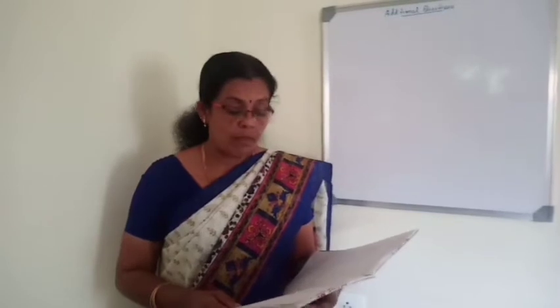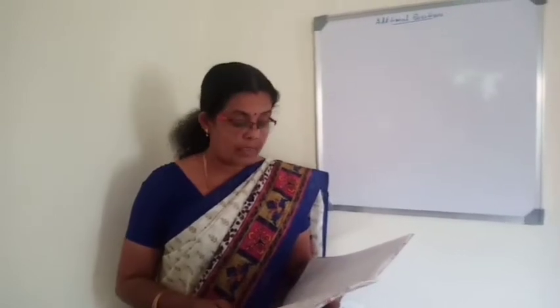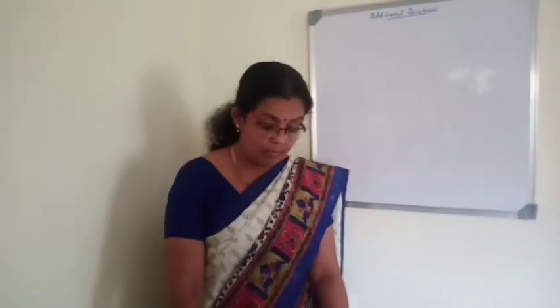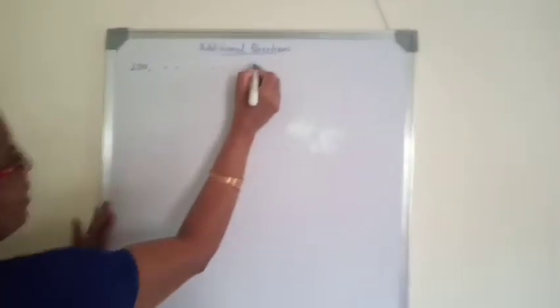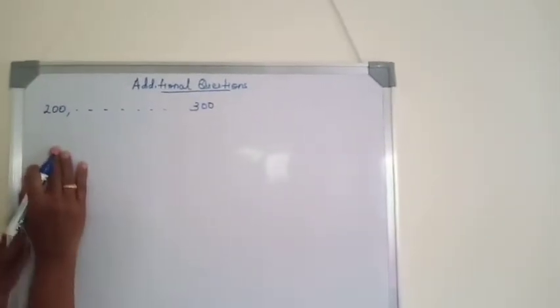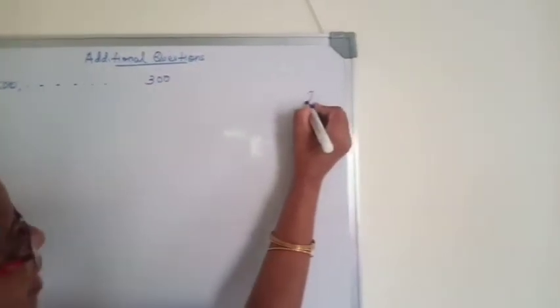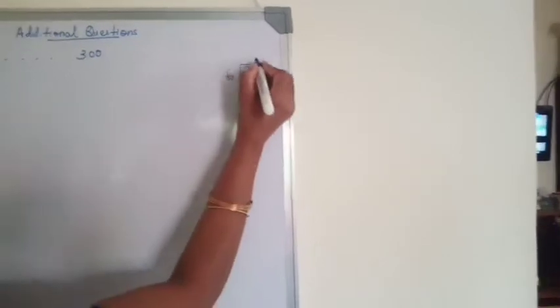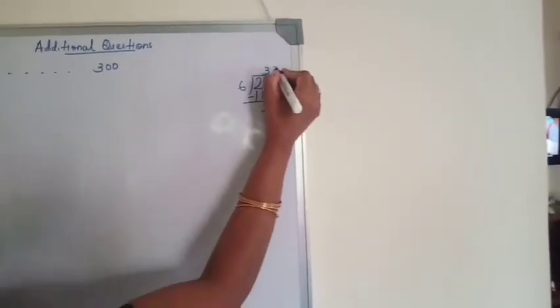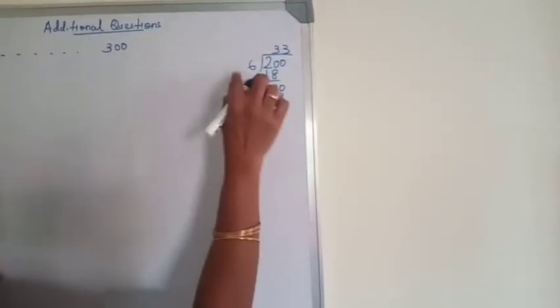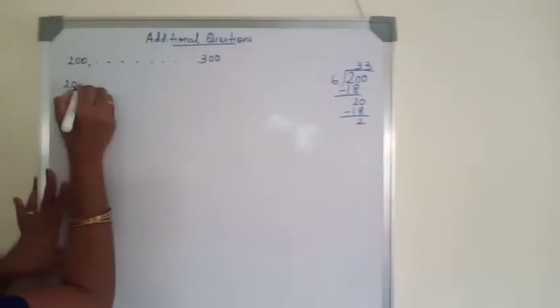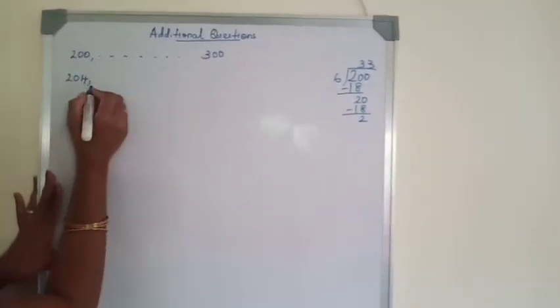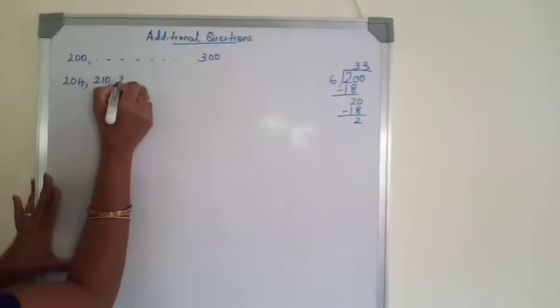Next question: find the sum of all natural numbers between 200 and 300 which are exactly divisible by 6. Between 200 and 300, we find the natural numbers divisible by 6. Dividing 200 by 6: remainder is 2, so 6 − 2 = 4, and 200 + 4 = 204. The first number is 204. To get the next, add 6: 210, 216, etc.